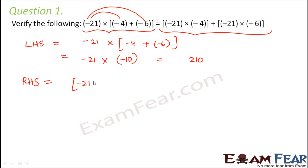Now let us calculate the right hand side. This would be -21 × (-4) + -21 × (-6). So 21 × 4 is 84 plus 84, plus this would be 126. So this is also plus 126. So this is equal to 210. Therefore, what do we see? We see that LHS is equal to RHS. Hence, verified.